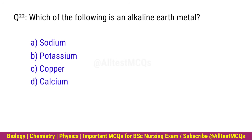Q22. Which of the following is an alkaline earth metal? Correct option is D. Caesium.